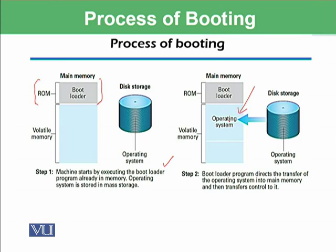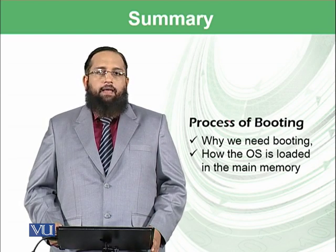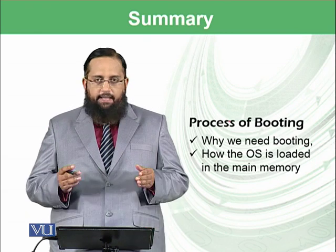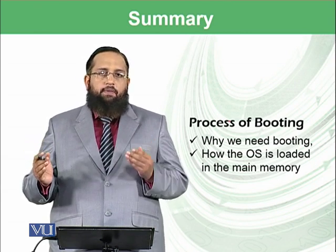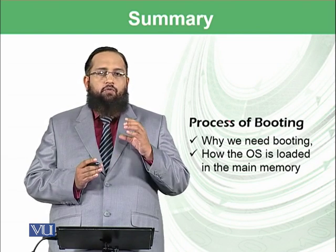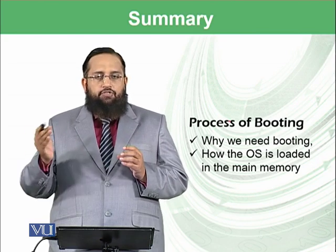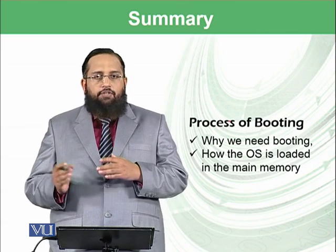The first instruction of the operating system is stored at the first address — for example, A0 — and that instruction is stored in the instruction register. To summarize, we have learned the basic phenomenon of how computers start working through the booting process. The operating system resides in mass storage and must be available in RAM for execution. The bootloader, permanently stored in a small non-volatile ROM, transfers the operating system from mass storage to main memory and transfers control to it.